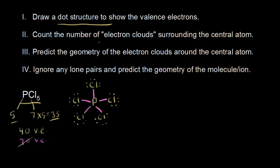For step 2, we count the number of electron clouds surrounding our central atom. An electron cloud is just a region of electron density. Each set of bonding electrons between phosphorus and a chlorine represents one electron cloud, and we have a total of 5 electron clouds around our central atom.